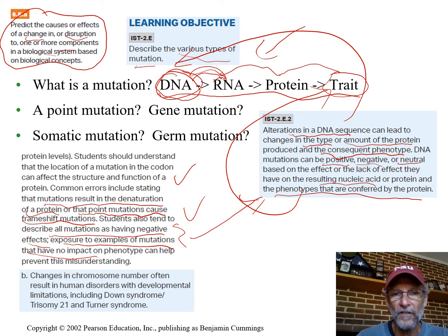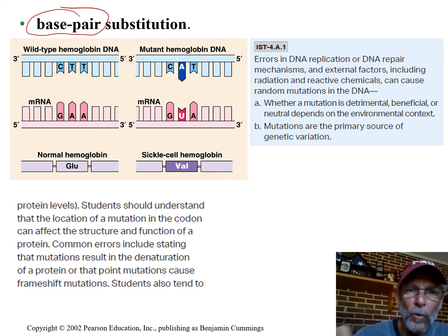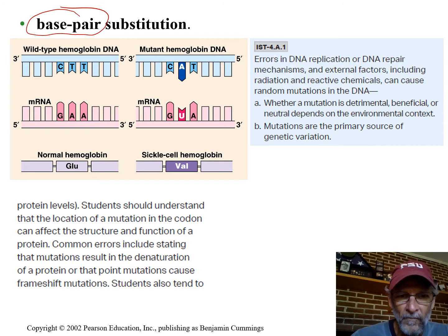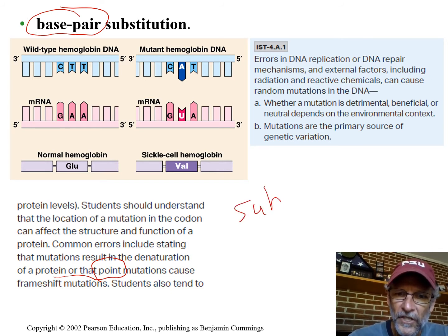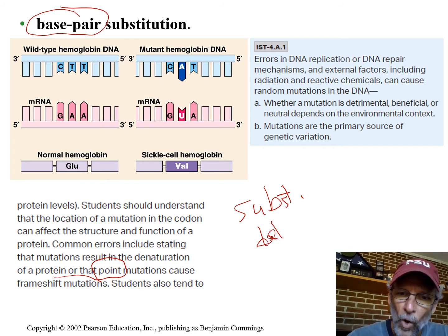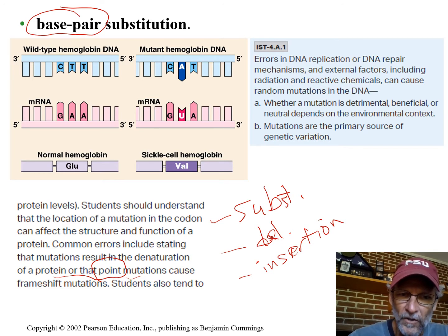What kinds of substitutions are there? Where a single base is substituted — sickle cell is the classic example. This is a point mutation. There are three kinds of point mutations: substitution, deletion where one base is deleted, and insertion where one base is inserted. Point mutation means just one base has changed, so it can be any one of these changes.